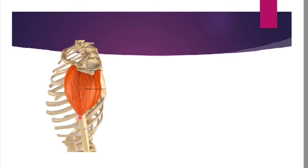The deltoid muscle is triangular in shape with a V-shaped origin. The anterior fibers arise from the anterior margin of the lateral one-third of the clavicle, the middle or acromial fibers arise from the lateral margin of the acromion, and the posterior fibers arise from the lower lip of the crest of the spine of the scapula. It is inserted into the V-shaped deltoid tuberosity on the lateral surface of the humeral shaft.